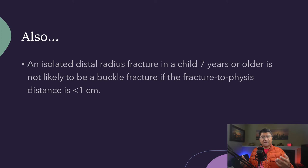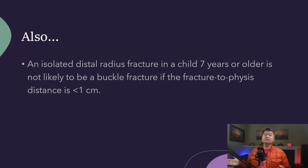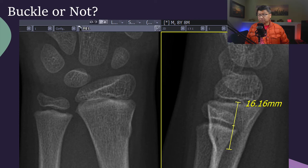We also came up with this corollary, which applies to the older child — somebody who's maybe 7, 8, or 9 years or older. An isolated distal radius fracture in a child 7 years or older is not likely to be a buccal fracture if the fracture-to-physis distance is less than one centimeter. This is a roundabout way of saying that the closer the fracture is to the physis, particularly in an older child, the less likely it's going to be a buccal fracture and the more likely it's going to be something like a Salter-Harris type injury.